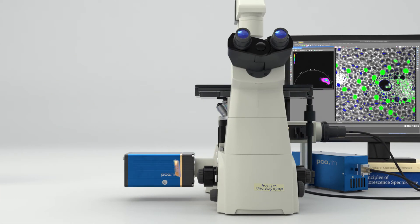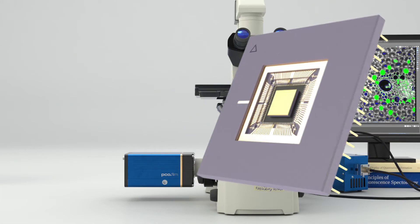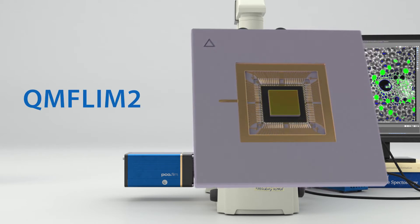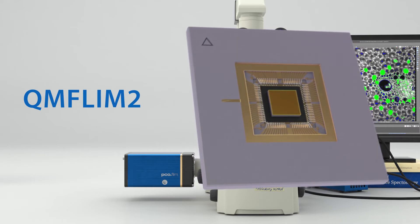By the development of a novel fast modulatable CMOS image sensor, the QM FLIM2, the so-called frequency domain method became more attractive.